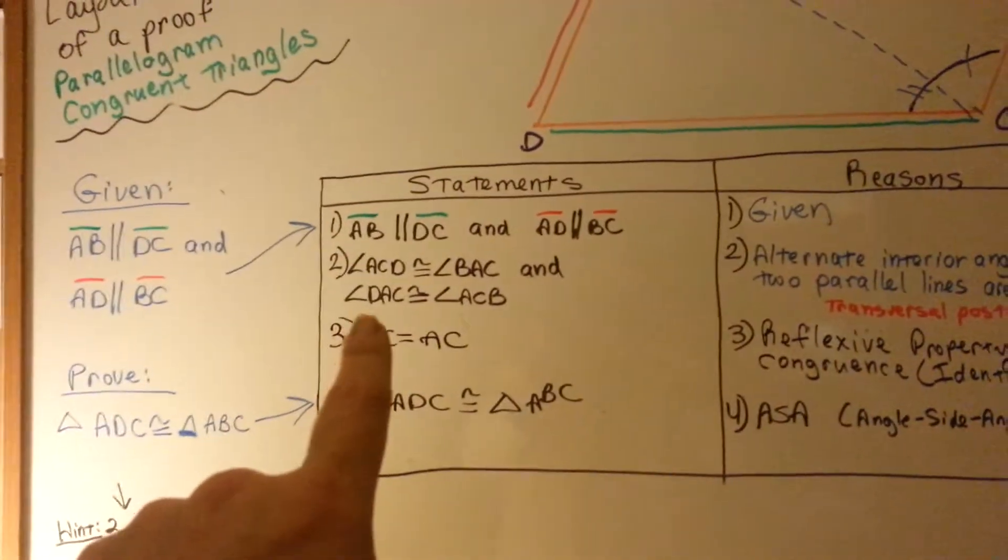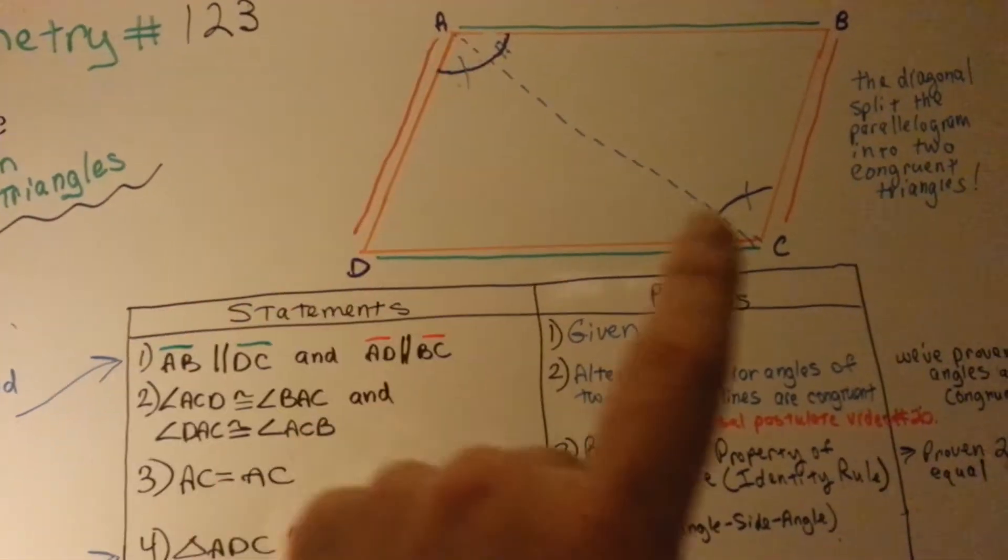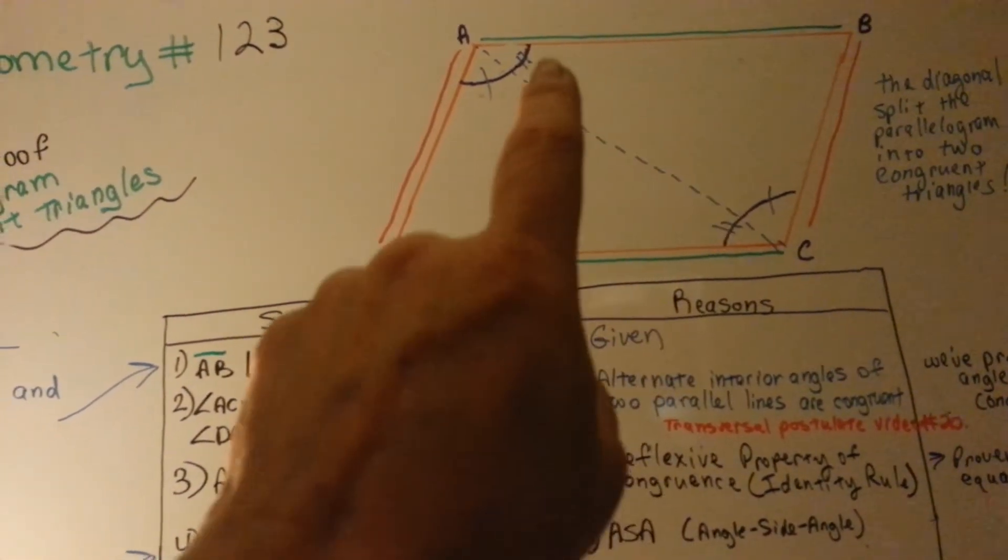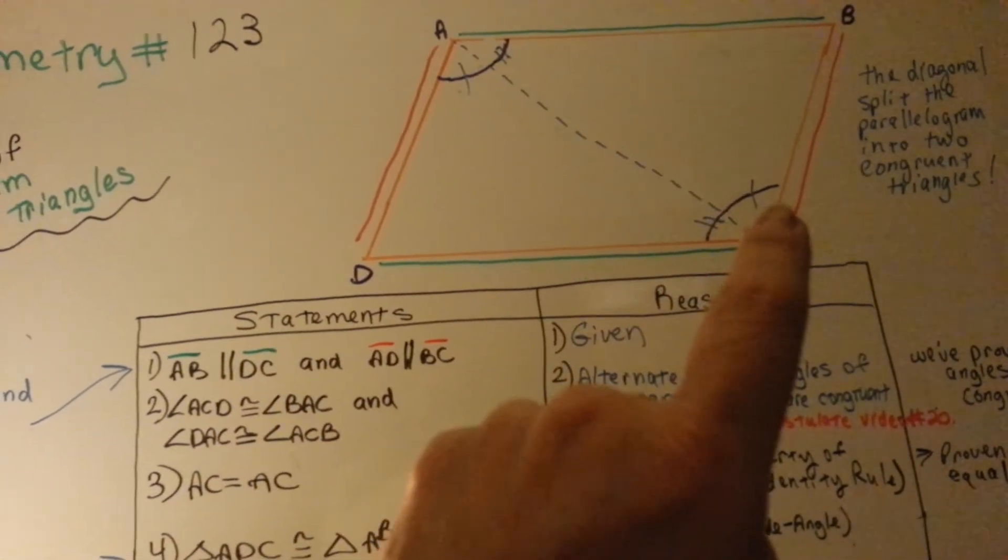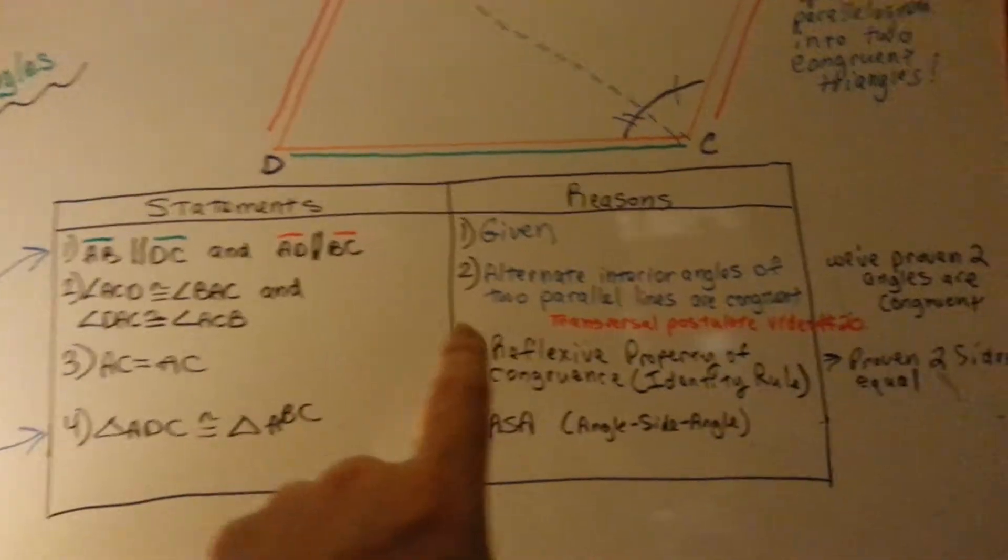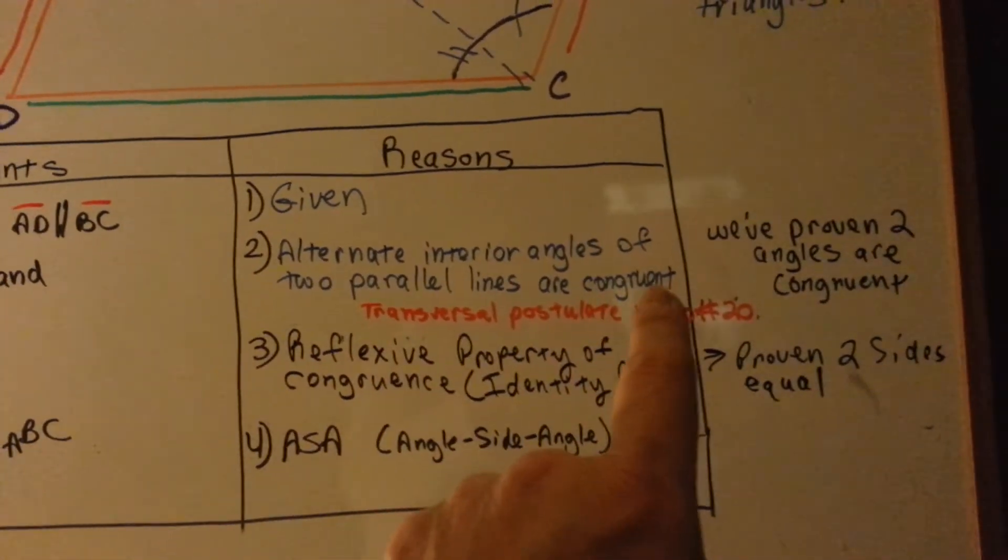Now, what are we going to say? Well, we're going to say that the angles of ACD, ACD, the one with the two hash marks, is congruent to that one with the two hash marks. And this one with the one hash mark is congruent to that one with the one hash mark. And our reasoning is alternate interior angles of two parallel lines are congruent.